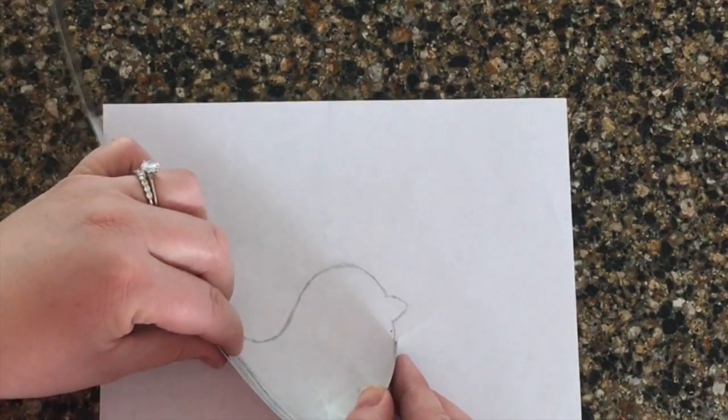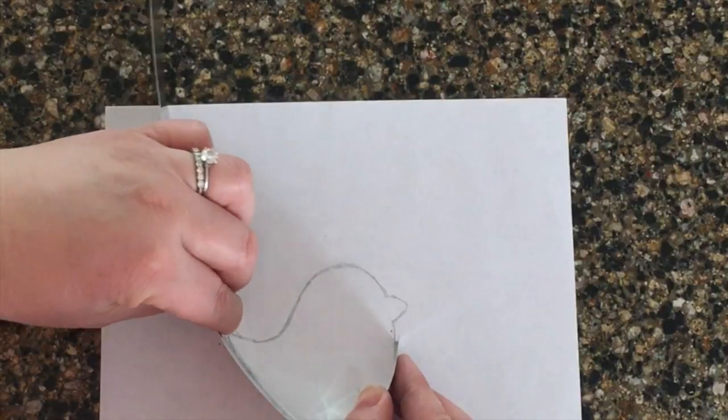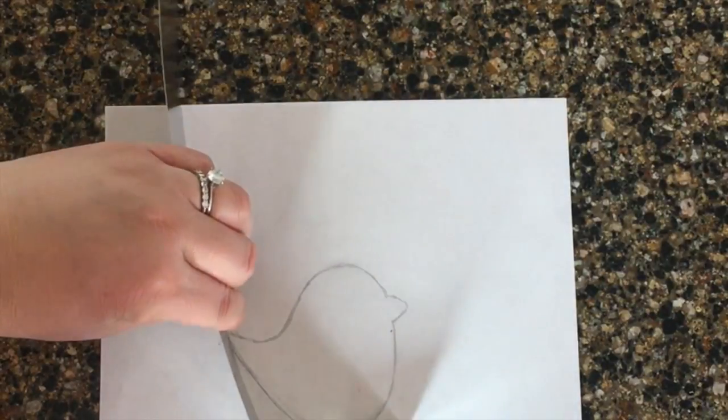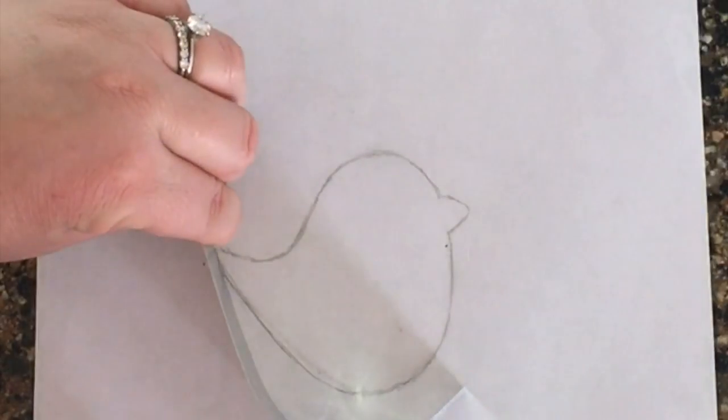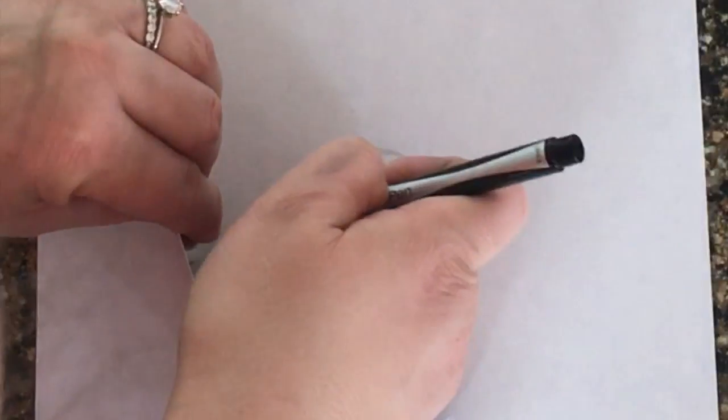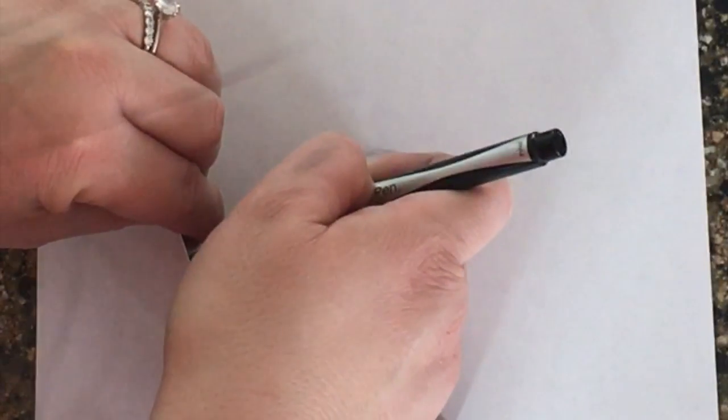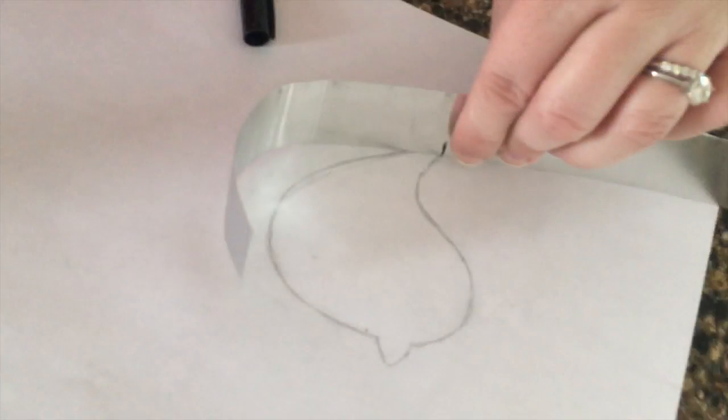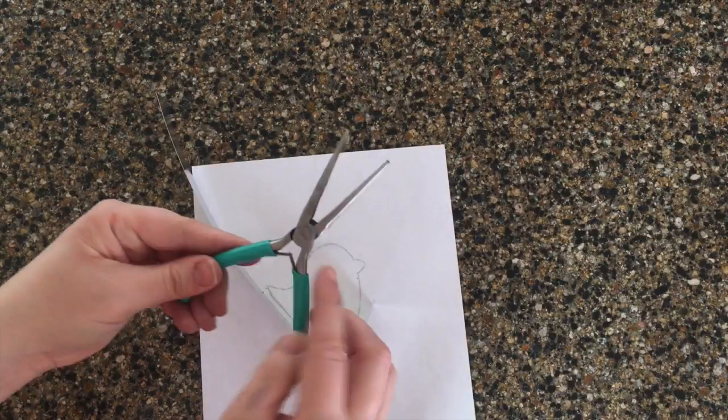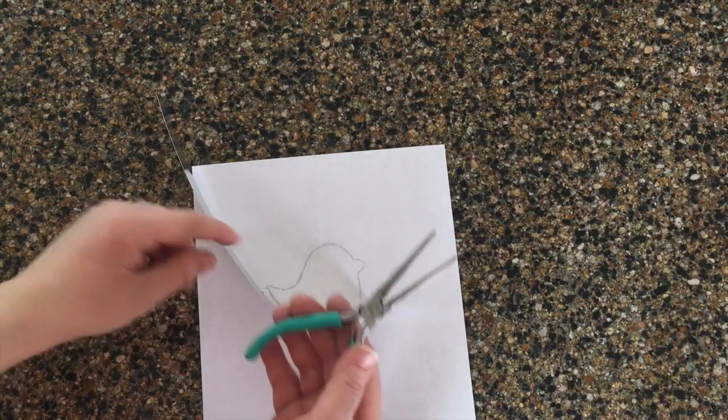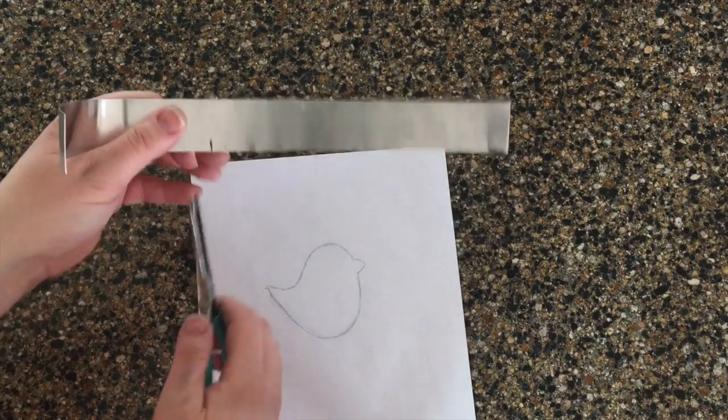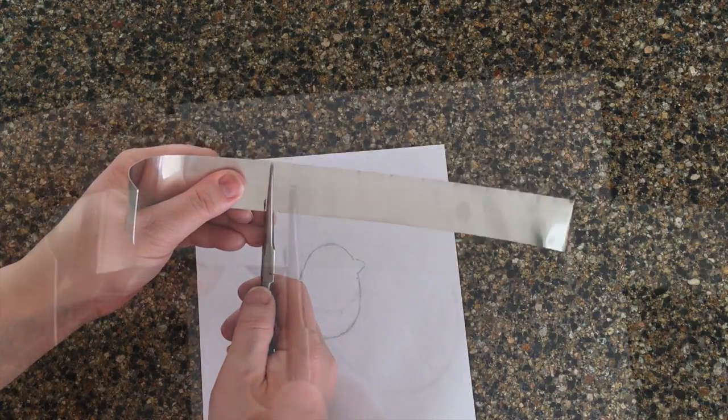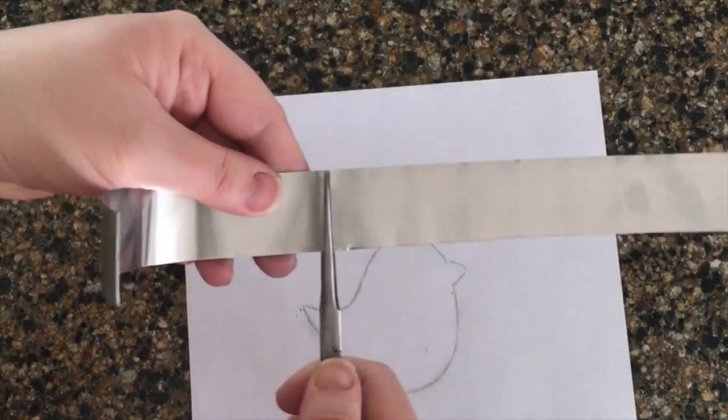Now we're getting to our first angle. Hold the strip against the template. Mark it where the end of the bird starts to angle upwards. Pay attention to which direction you're going to bend it. These strips are pretty thin and if you have to bend it back and forth, eventually it will break. Grab your needle nose pliers and clamp it along the line you just made. I found the best way to bend these strips is to do it hard and fast. It creates the best angles.